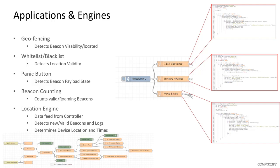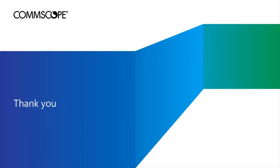All of this information can be fed into a location engine, taking a constant data feed from the IOT controller to detect new tags or devices entering a building, determine location and dwell time, and perform heat mapping — all from this simple level of data. Environmental data can be layered in as well to add even more capability. This completes our introduction to BLE and the Ruckus IOT suite and how BLE can be used to provide different applications and services.